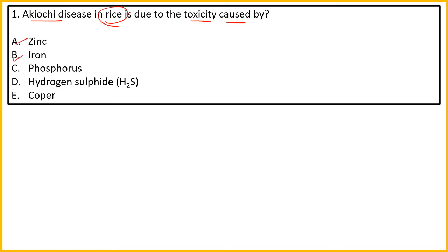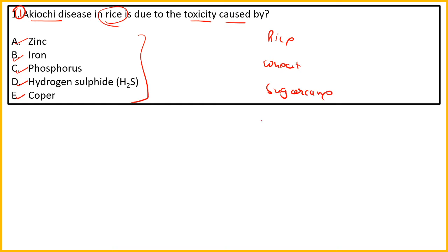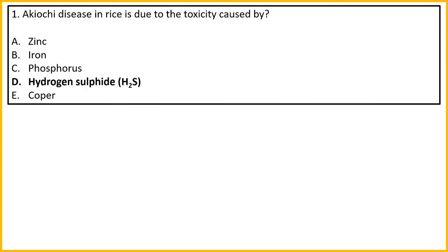Option A: Zinc. Option B: Iron. Option C: Phosphorus. Option D: Hydrogen Sulphide. Option E: Copper. The right answer over here is option D, Hydrogen Sulphide — H2S — which causes the toxicity of rice.